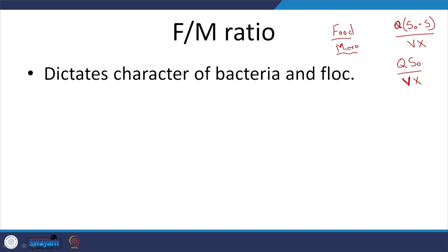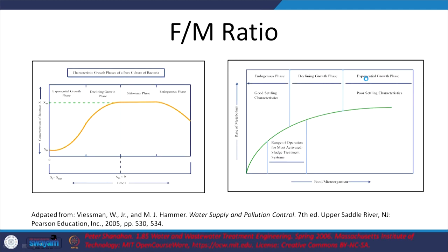So what does this give us an idea about? It gives an idea about the kind of bacteria that can thrive and thus the kind of floc or settling characteristics. Here we have two figures — a variation of the growth curve figure we looked at earlier, which showed lag phase, acclimatization, exponential growth, stable, and then decay.